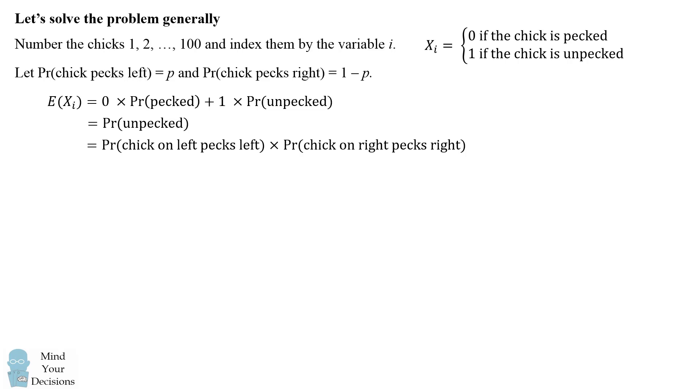As stated before, this depends on the probability that the chick on the left pecks left and the probability the chick on the right pecks right. This will be equal to p times 1-p.